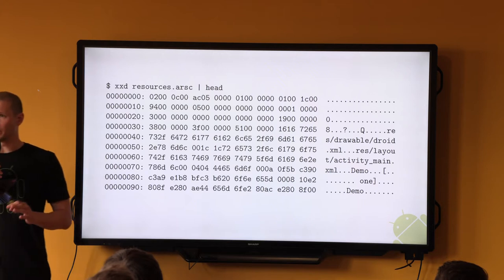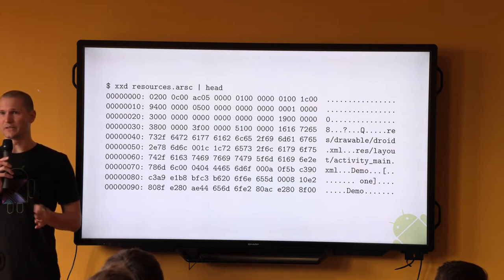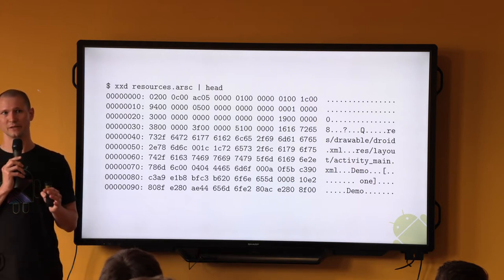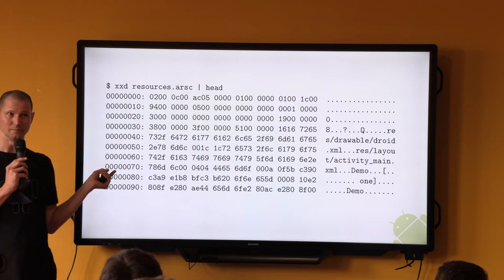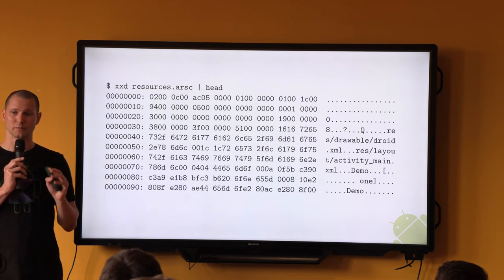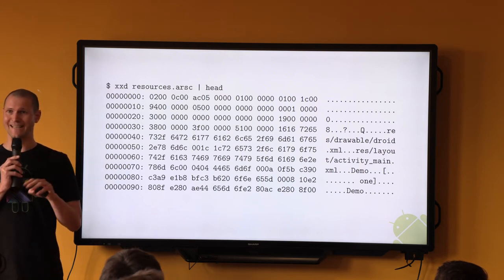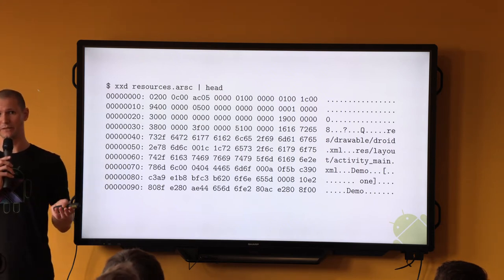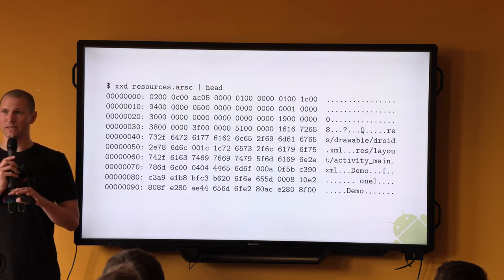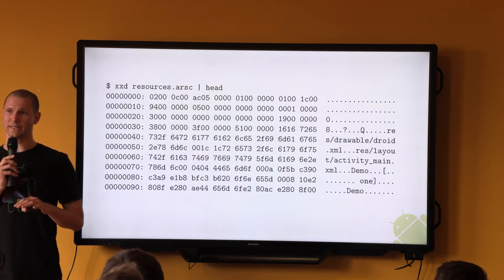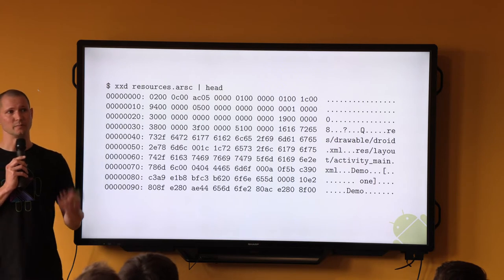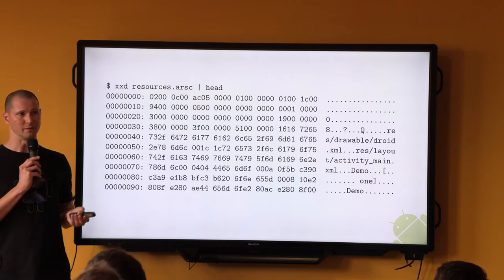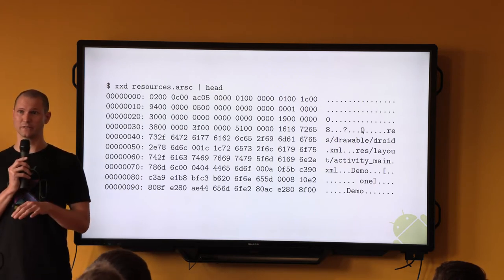The resource blob is a hash map on steroids. It is highly optimized for efficient lookup at runtime, and it achieves this because it's a binary file, compiled with the correct endianness of most embedded devices, and stored as an uncompressed entity in the zip file. These attributes allow Android to simply memory map the file from your APK without extracting it to disk first.